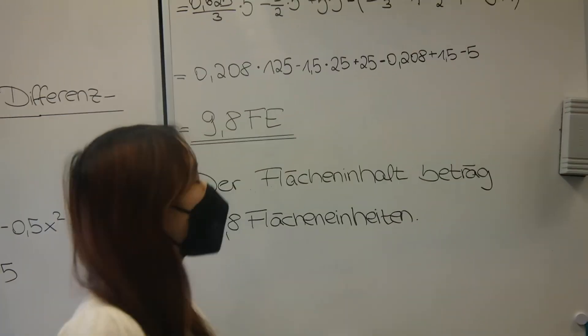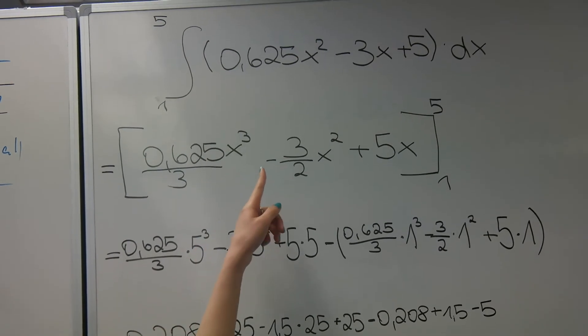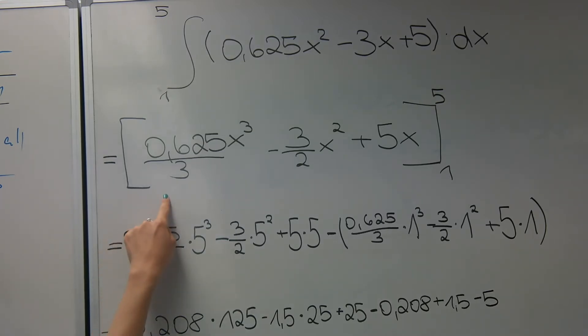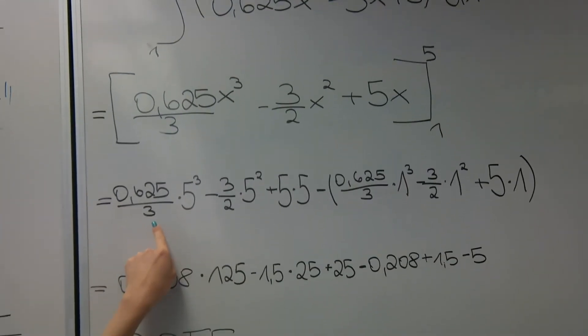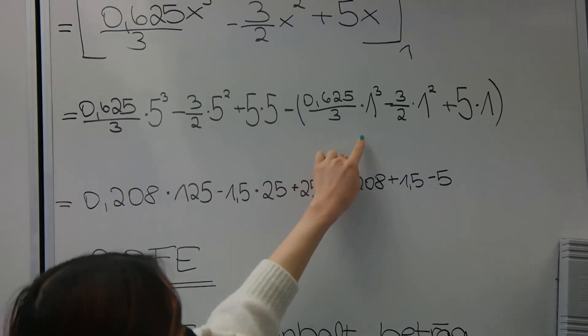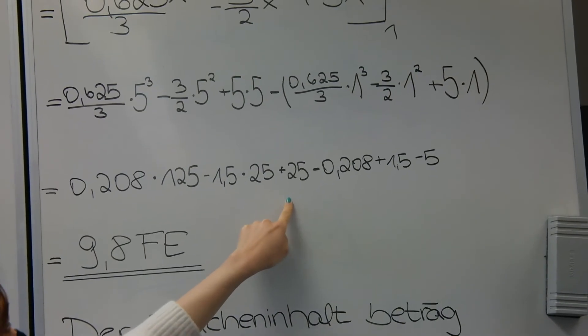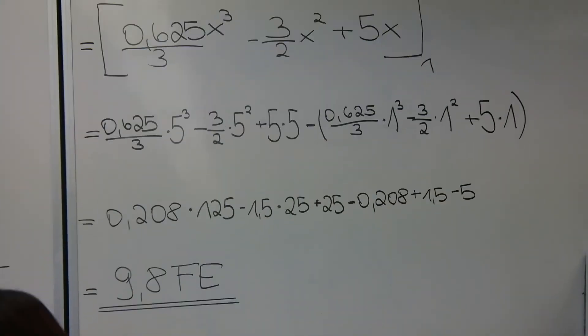Ja, genau. Danach bilden wir das Integral von 1 bis 5 über 0,625x² minus 3x plus 5 nach dx. Danach bilden wir hier die Stammfunktion 0,625 durch 3 mal x³ minus 3 halbe mal x² plus 5x in den Grenzen von 1 bis 5. Dann setzen wir einmal die obere Grenze ein und dann einmal die untere Grenze. Das haben wir hier nochmal ausführlicher aufgeschrieben. Und da beträgt dann die Fläche 9,8. 9,8, richtig. Ja, gut.